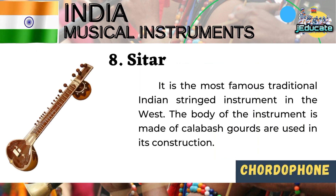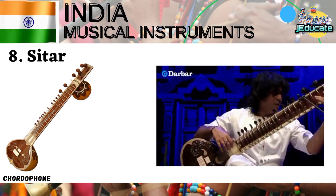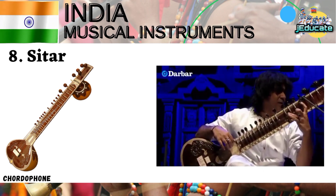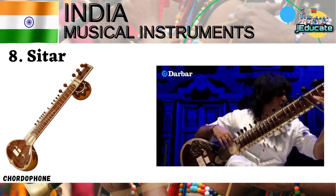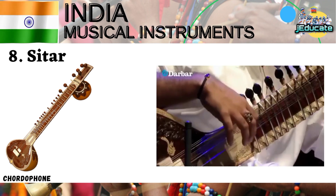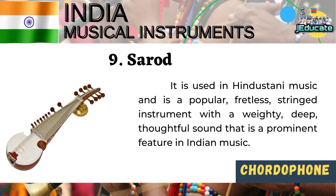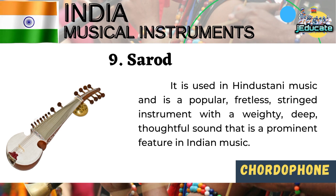Number 8, Sitar — it is the most famous traditional Indian stringed instrument in the West. The body of the instrument is made of calabash; gourds are used in its construction. Number 9, Sarod — it is used in Hindustani music and is a popular fretless stringed instrument with a weighty, deep, thoughtful sound that is a prominent feature in Indian music.